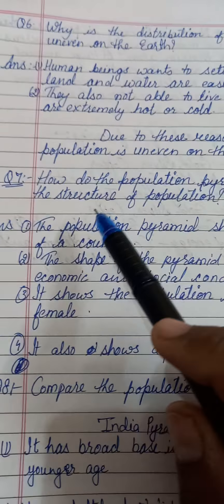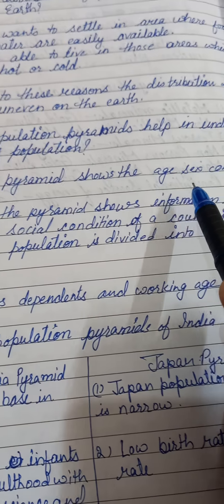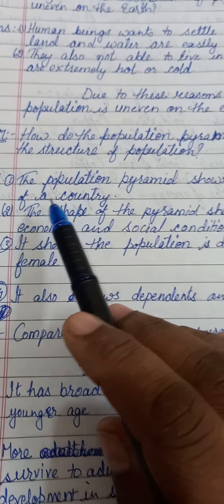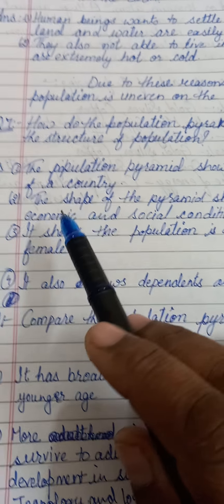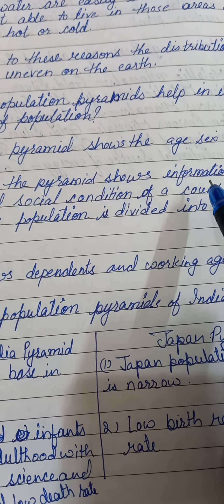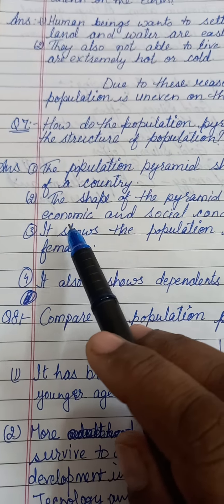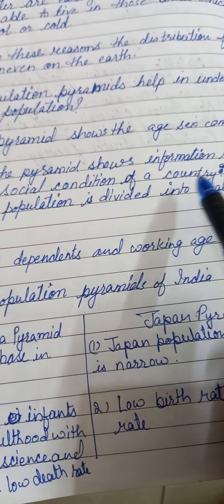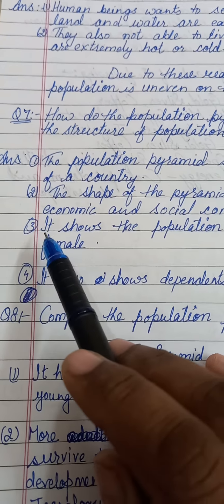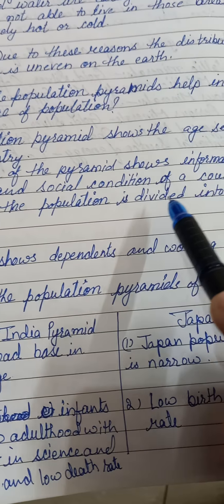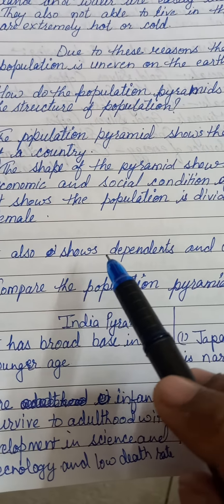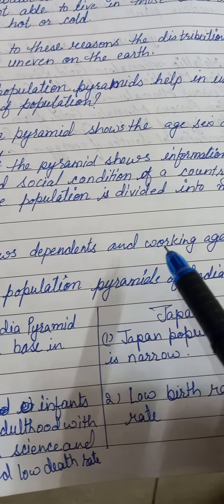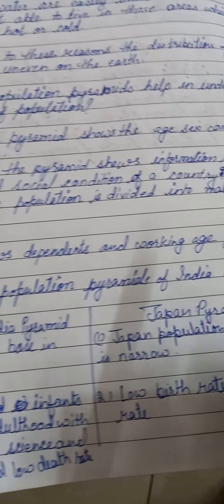Question number 6: Why is the distribution of population highly uneven on the earth? Answer: Number 1, human beings want to settle in an area where food, land and water are easily available. Number 2, they are also not able to live in those areas which are extremely hot or cold. Due to these reasons, the distribution of population is uneven on the earth.